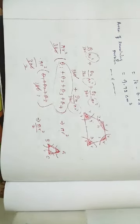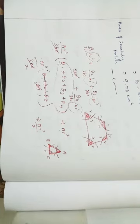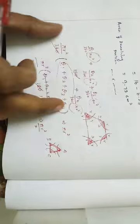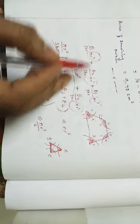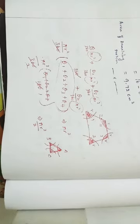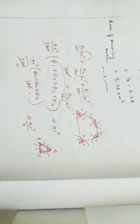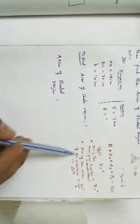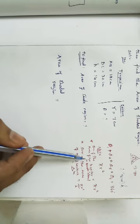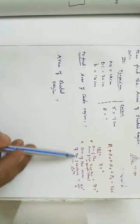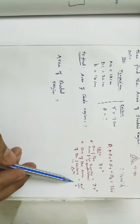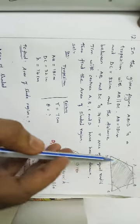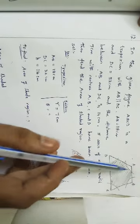You can take this as a note and apply it directly wherever needed, saving time. Now, area of shaded region = area of trapezium − area of four sectors = area of trapezium − πr².